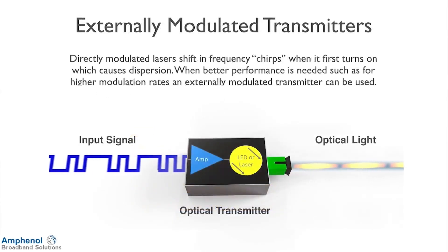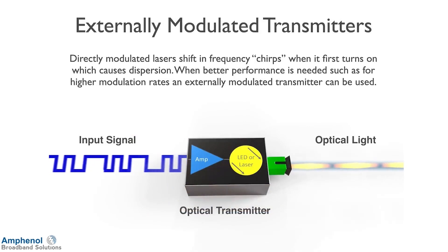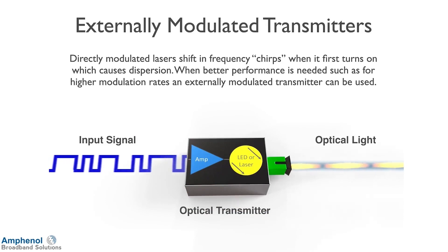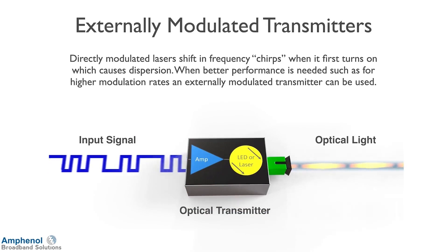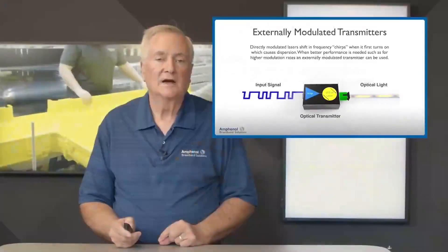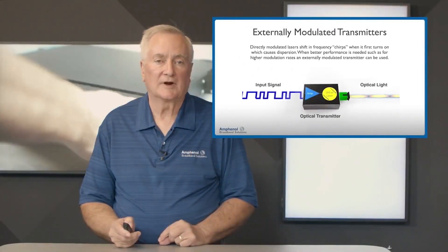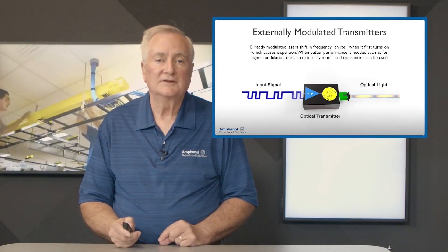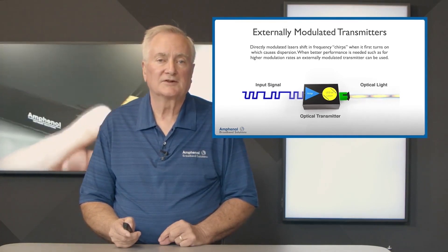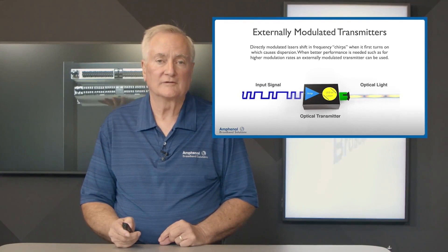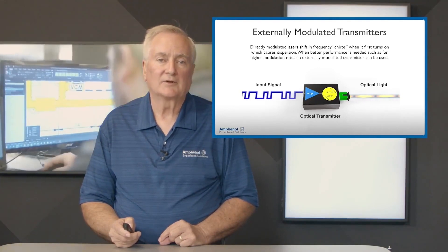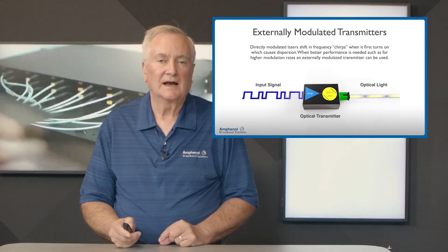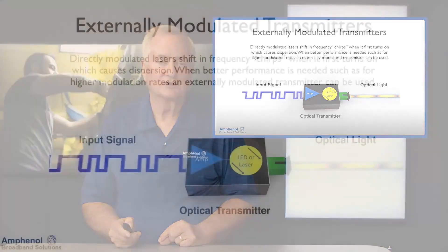Here I'm showing a direct modulated optical transmitter. With direct modulated lasers, they can shift in frequency — called chirp — when they first turn on, which causes dispersion. When the input signal hits the laser, it actually turns the laser on and off to create output pulses of light. Every time the transmitter turns on and off, it can cause that chirp, or dispersion.